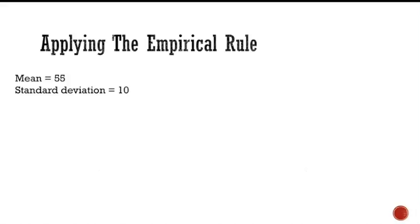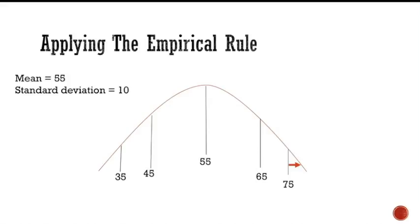After drawing a normal curve, any batteries lasting more than 75 hours are more than two standard deviations away from the mean. By only looking at the data on the right side of the mean, the percentage of data between the mean and two standard deviations needs to be calculated. By using the empirical rule, since we are only looking at values above the mean, 95 percent divided by two equals 47.5 percent.